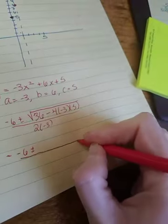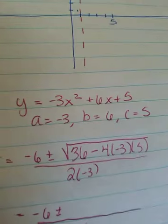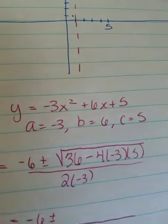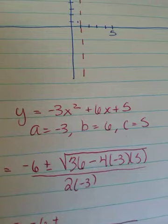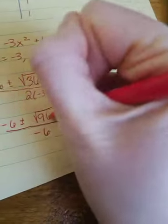All right. So, we've been doing this for a while now. And, I'm just going to take what's under the radical and throw it in my calculator here. I apologize for the blurriness. It should come in. Just give it a minute. 36 minus 4 times negative 3 times 5. You're going to get 96. Okay?